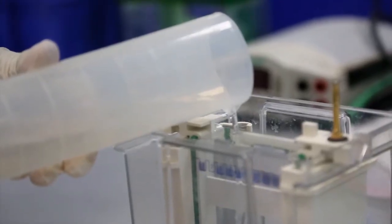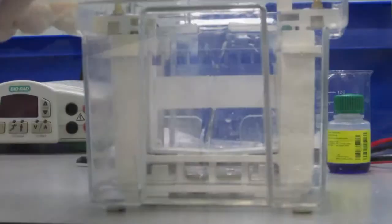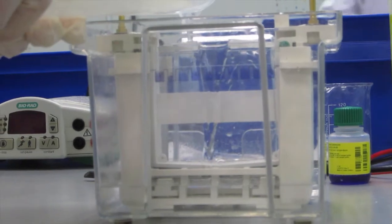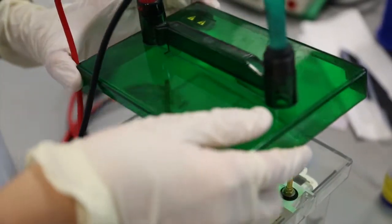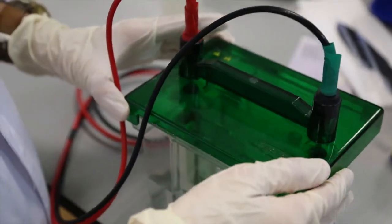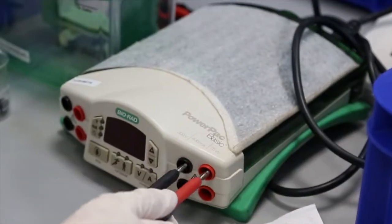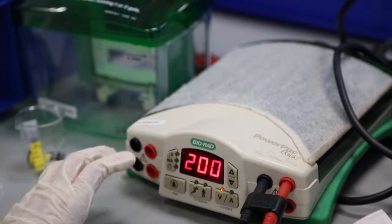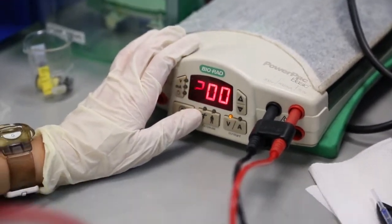Fill up the lower buffer chamber of the mini-tank with the remaining electrophoresis buffer. Cover up the mini-tank and connect the wires to the respective ports of a DC circuit generator. Run the gels for 15 minutes at a constant voltage of 200 volts.